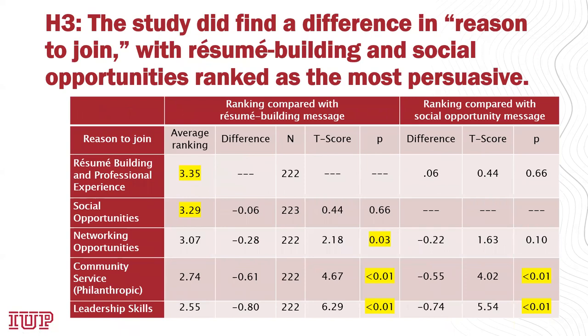Hypothesis three was that based on the category of reason to join an organization baked into those messages, there would be a statistical difference — and that was indeed confirmed. In particular, resume building and social opportunities ranked the highest, as you can see with the highlighted values, and that was statistically significant. This relates back to expectancy theory, which was one of those three theories.